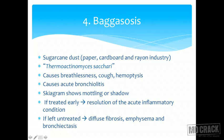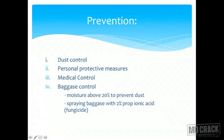Skiagram (X-ray) shows mottling or it can also show shadow, so that is non-consistent. If treated early, resolution of the acute inflammatory condition occurs — again an exception, here we have a disease that can be treated. If left untreated, bagassosis causes diffuse fibrosis, emphysema, and ultimately leads to bronchiectasis. Prevention of bagassosis includes dust control measures, isolation, personal protective equipment, and regular medical follow-up of workers so that chest symptoms can be monitored.